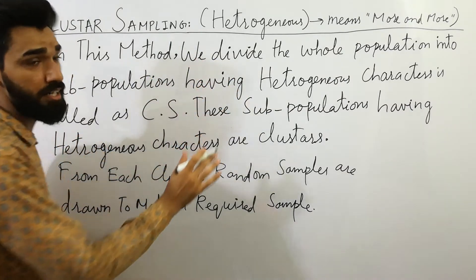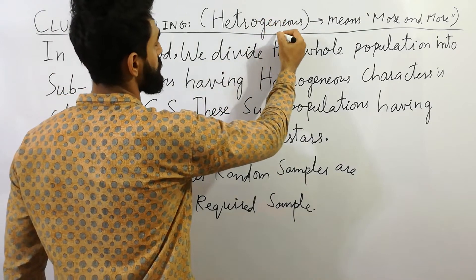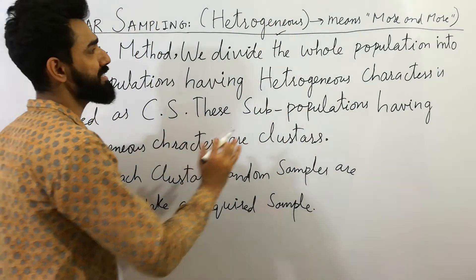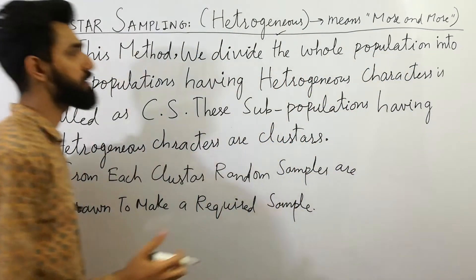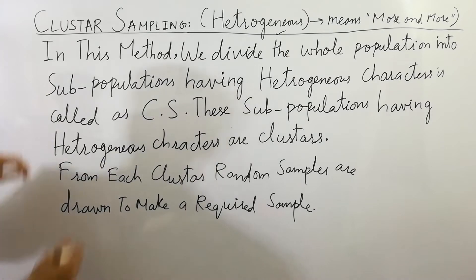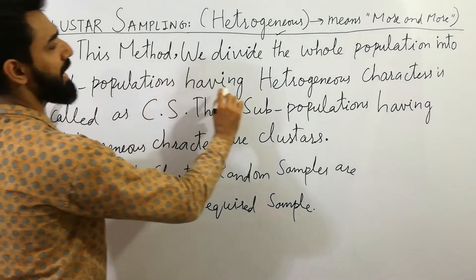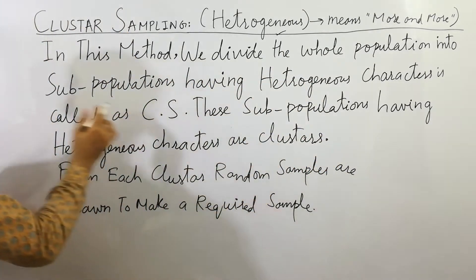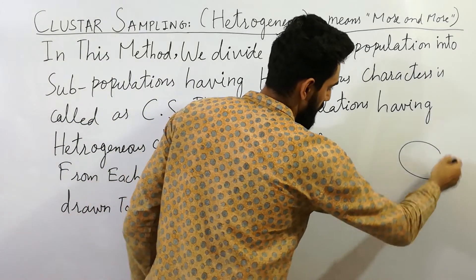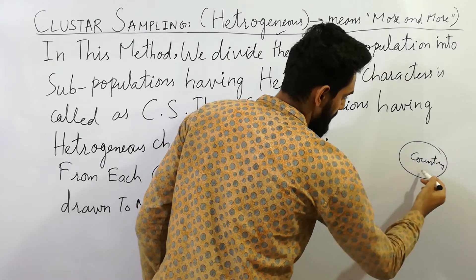The most important keyword is 'heterogeneous' — heterogeneous is the most important keyword to remember. It means more and more variety. Notice that a cluster also means more and more variety. So here in this method, we divide the whole population into subpopulations. Suppose we have any country — we divide the country into parts.